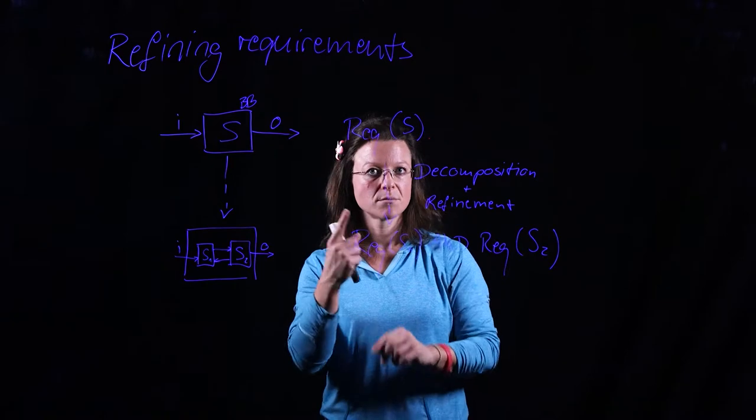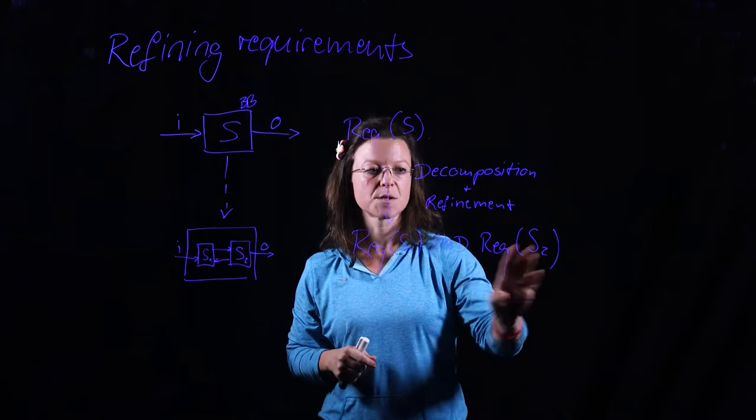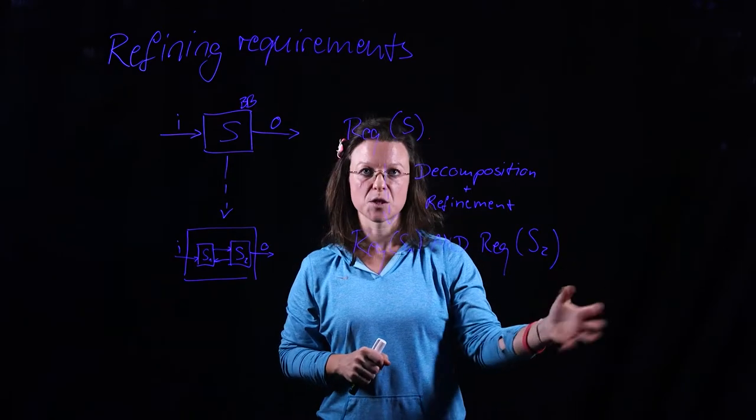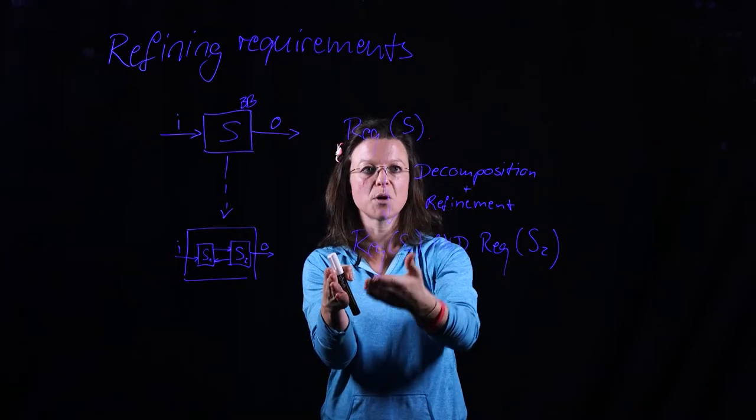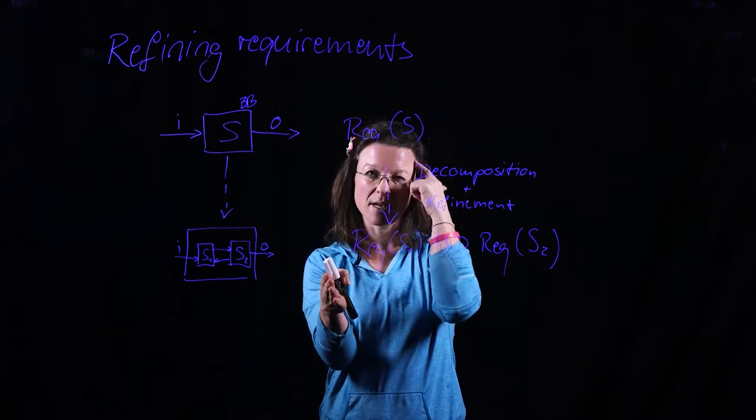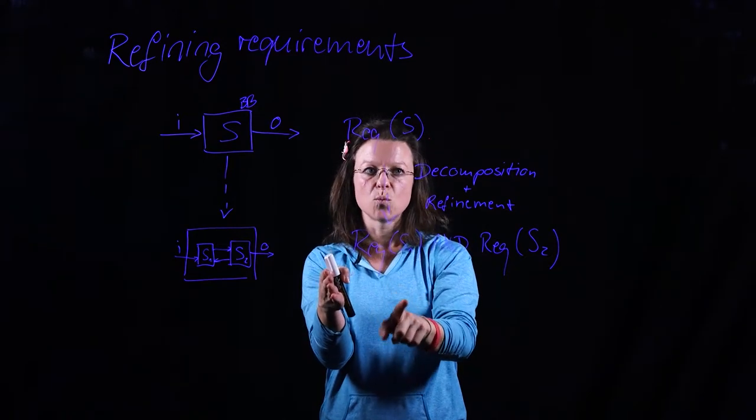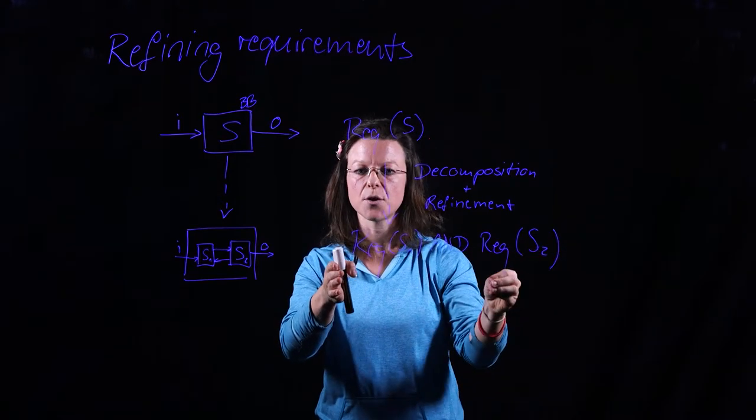My subsystem 1 could be the pedal and then the subsystem 2 could be the brake pad that is pressing on the tire. So the way how I decompose that is I have to ask myself what part of this requirement refers to the brake pedal and what part of this requirement refers to the brake pad that goes onto the tire.